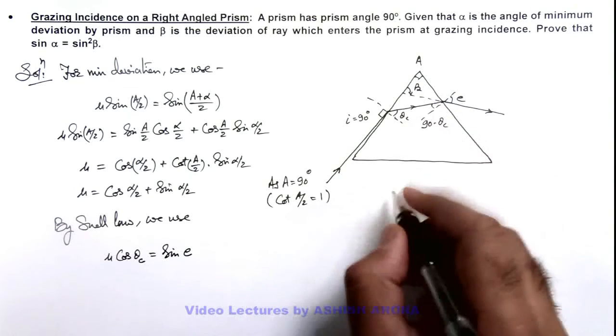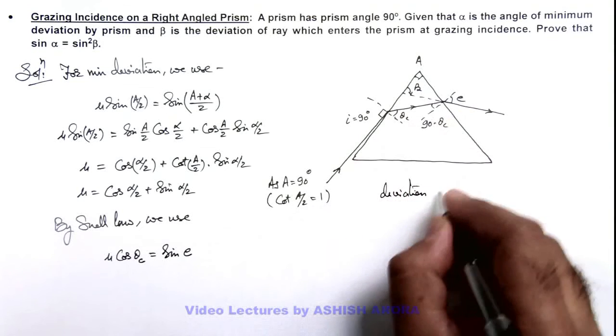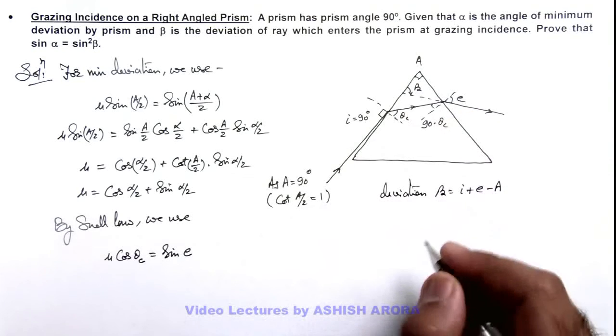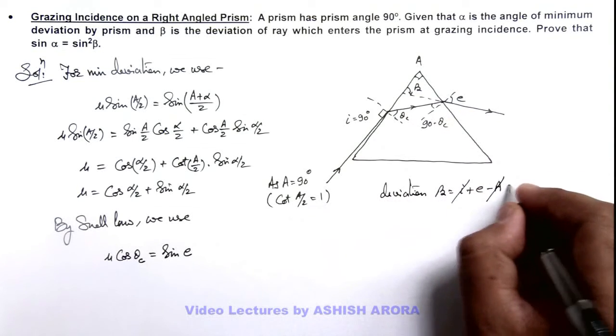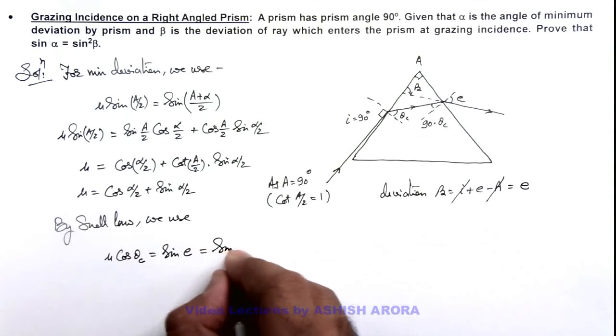And here we can write the deviation angle beta can be written as i plus e minus A. And here i and A both are 90 degrees, those get cancelled out, and the value of beta is e. So this can be written as sine beta.